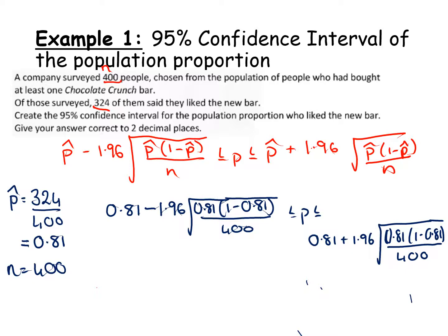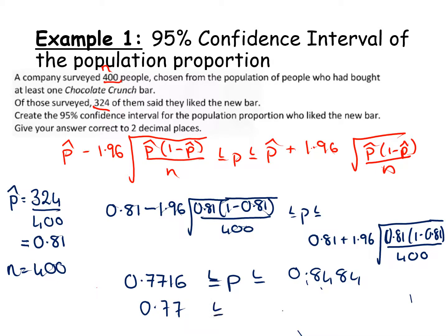At this point you can put that straight into the calculator to work out the population proportion. Working through both sides, we get 0.7716 is less than or equal to p, is less than or equal to 0.8484. The question asked for two decimal places, so our final answer is 0.77 is less than or equal to p, is less than or equal to 0.84.